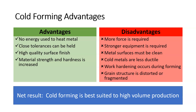Stronger equipment is therefore required. Metal surfaces still need to be clean — with the higher forces required, unclean surfaces are going to make things worse. And cold metals become less ductile, and the grain structure is distorted or fragmented. We don't get the recrystallization that occurs with hot forming, where the grains reform into more equiaxed structures with removal of impurities and porosities.